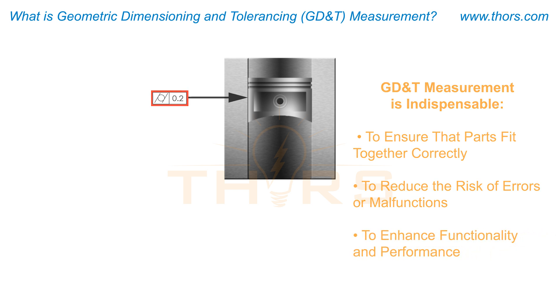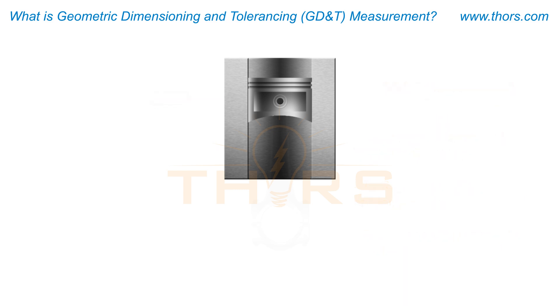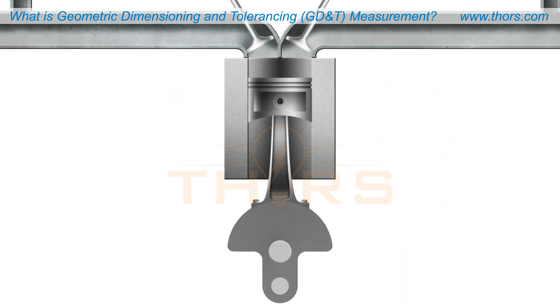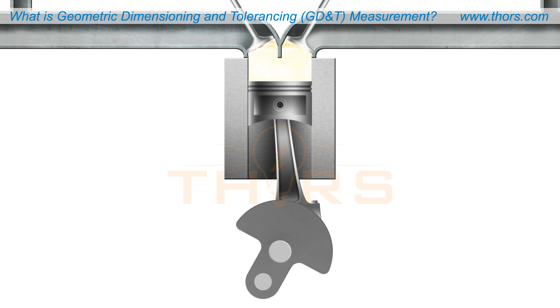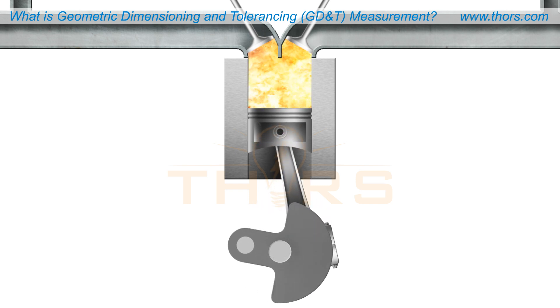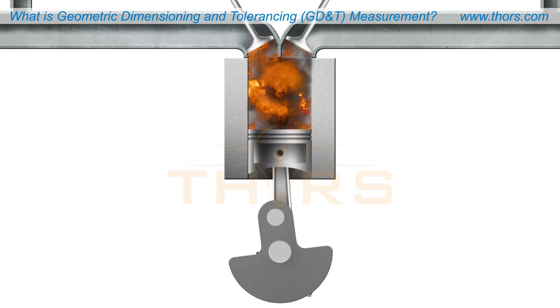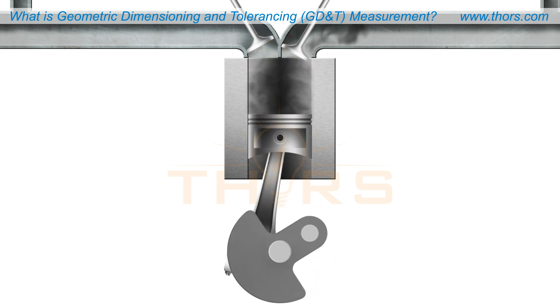For example, GD&T is critical in moving mechanisms such as piston and cylinder assemblies, where a proper fit between mating surfaces is crucial.